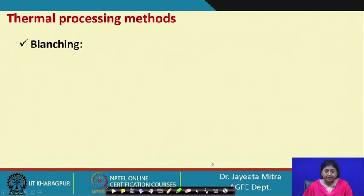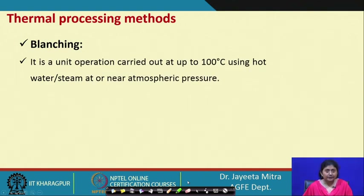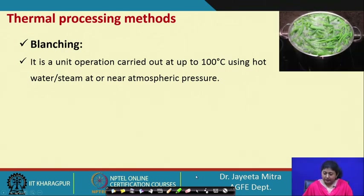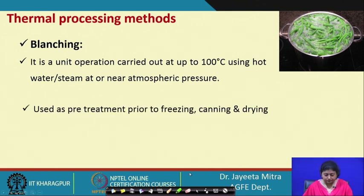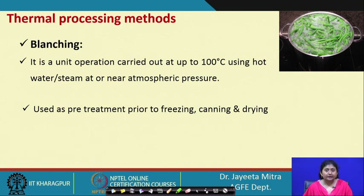The first thermal treatment we will discuss is blanching. Blanching is a unit operation carried out at up to 100°C using hot water or steam at or near atmospheric pressure. We normally perform it at atmospheric pressure. Blanching is a very common phenomenon done in household practice as well, for reducing surface microbial contamination and mainly to reduce enzyme activity. However, blanching alone cannot be treated as a thermal processing that can prevent food from long-term microbial contamination. It is mostly used as a pretreatment prior to freezing, canning, and drying.